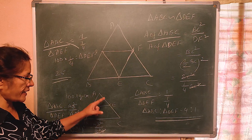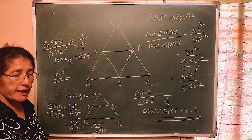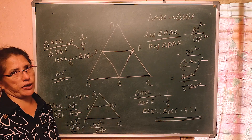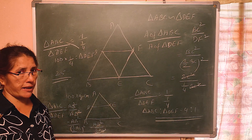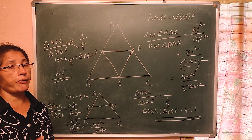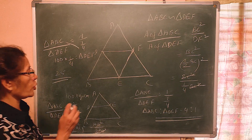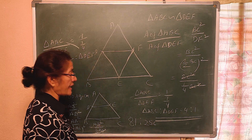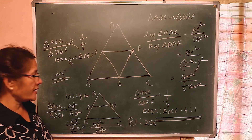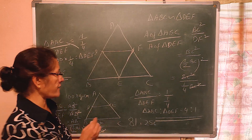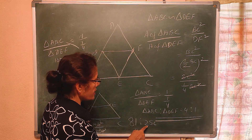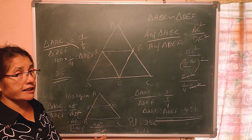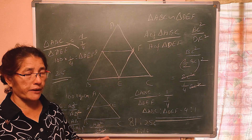Another type of question that may be asked: if the areas are in the ratio 81 : 256, then find the ratio of the sides. You have to find the square root — square root of 81 is 9, square root of 256 is 16. So the sides are in the ratio 9 : 16. These are the types of questions that normally appear in exams.